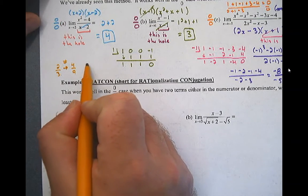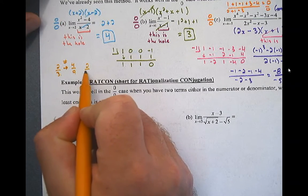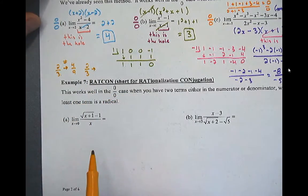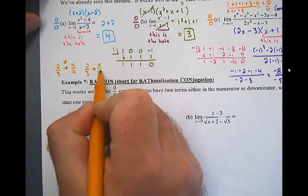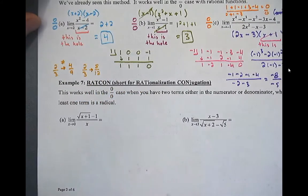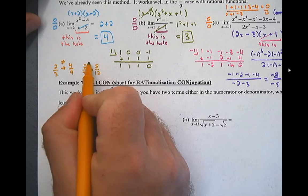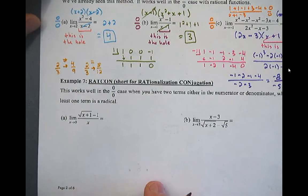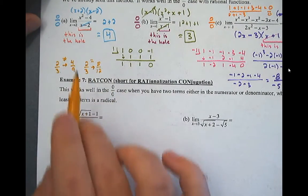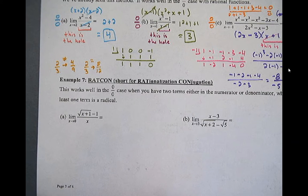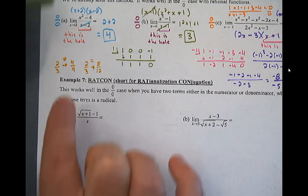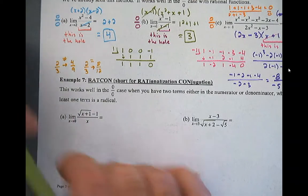This does work if you take two-thirds and multiply the top and the bottom by, say, four — you get eight over twelve, which is exactly the same thing. So it's legal to multiply the top and the bottom of a fraction by the same thing. It's not legal to do that when it comes to squaring. You can't square the top and the bottom and get the same result.